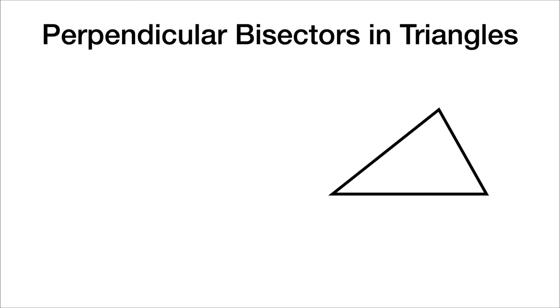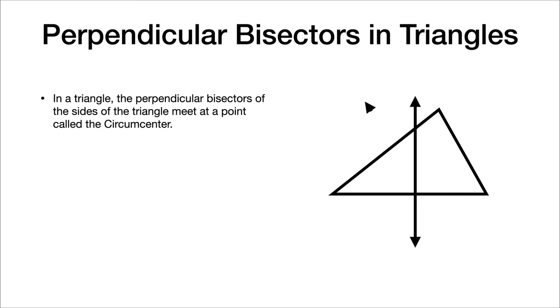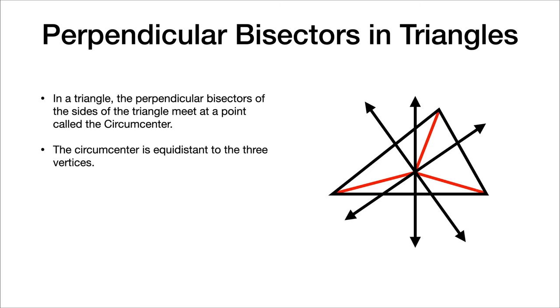Now let's talk about perpendicular bisectors and triangles. In a triangle, the perpendicular bisectors of the sides of a triangle meet at a point that we call the circumcenter. That is where these three lines are meeting.